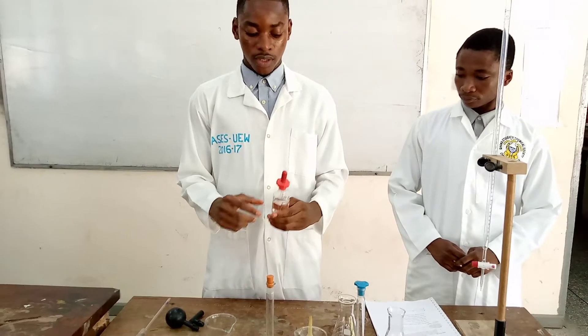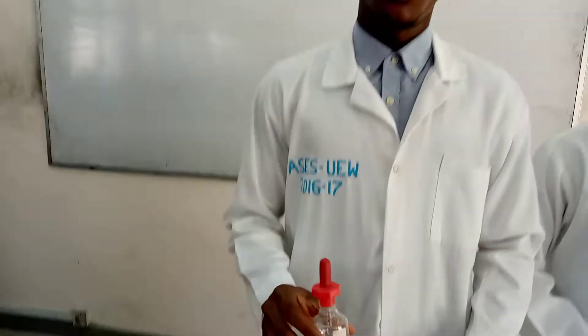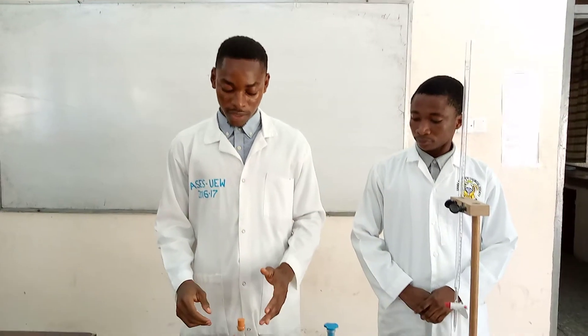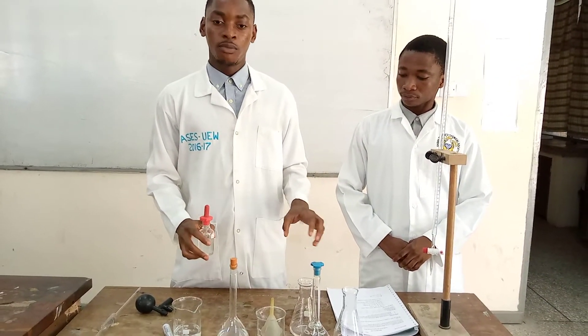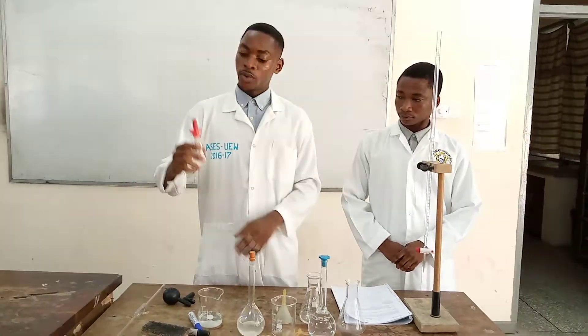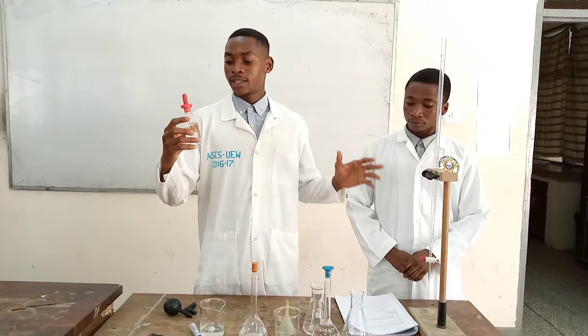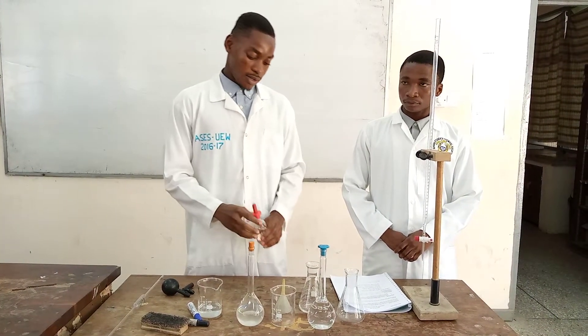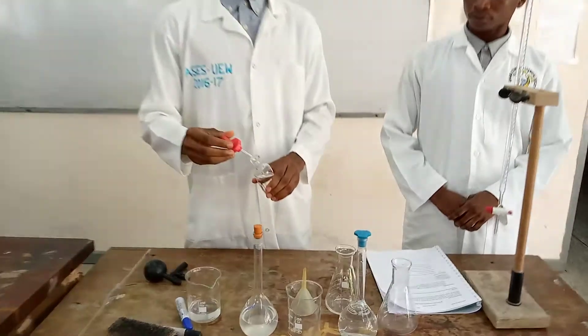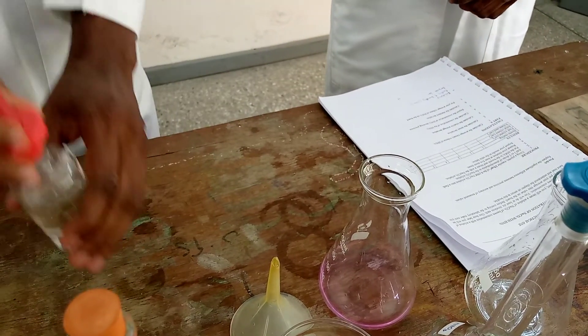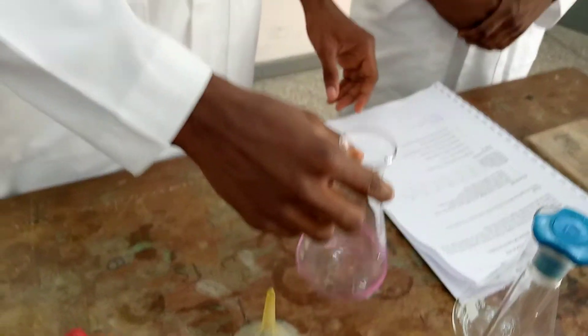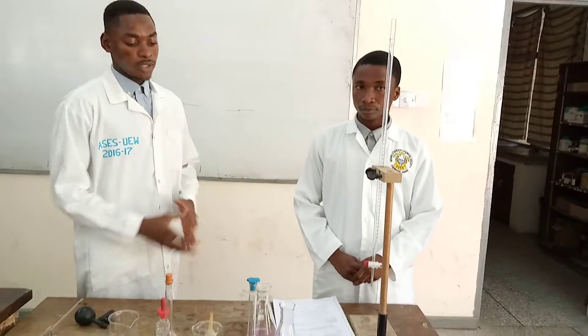So we are going to use the phenolphthalein indicator. We are using this indicator because we are titrating a strong acid against a strong base, and the pH of the neutral solution that will be formed is around 7. We use phenolphthalein because it works best within that range. So we take two drops of phenolphthalein into the solution. Then my colleague Isaac will pour the acid into the burette and he will continue from there.